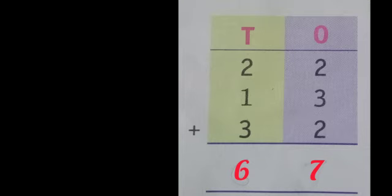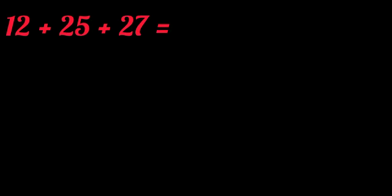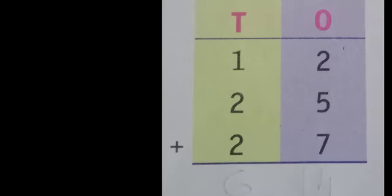Then, let us do one more question. 12 plus 25 plus 27. Here also, we should arrange the given numbers according to the place value. Then, add the numbers in the ones column.